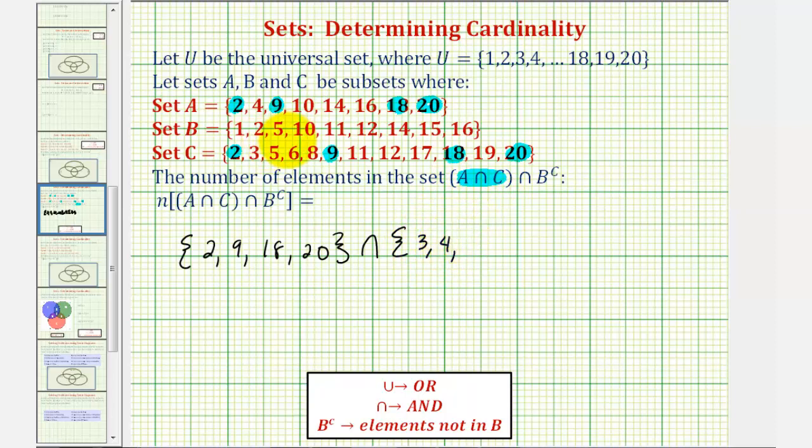And notice that six, seven, eight, nine are also not in B, so they would be in B complement. And then we have ten, eleven, twelve, notice thirteen is not in B, so thirteen is in B complement.